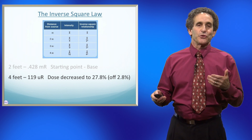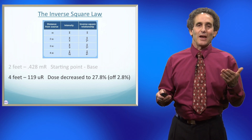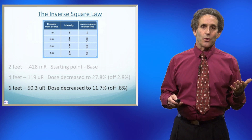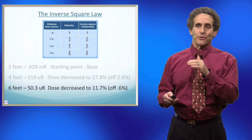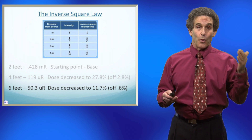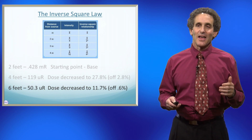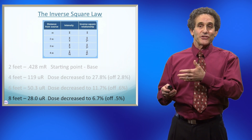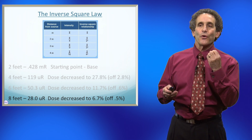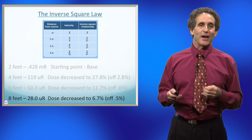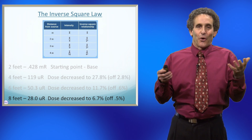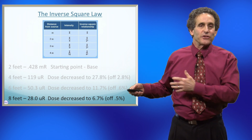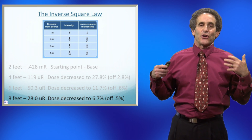The dose decreased to 27.8% — we were only 2.8% off from exactly what it should have been. When we went to six feet, which is a third, we had 50.3 micro R, so the dose decreased to 11.7%. It should have been 11.1% for the perfect one ninth — we were only off by 0.6%. Finally, at eight feet, it was 28.0 micro R, and it should have been a sixteenth. The dose decreased to 6.7% — the perfect would have been 6.2%, so we were only off by 0.5%. The inverse square law really works. If you can double your distance, you've cut the dose to yourself to a quarter.